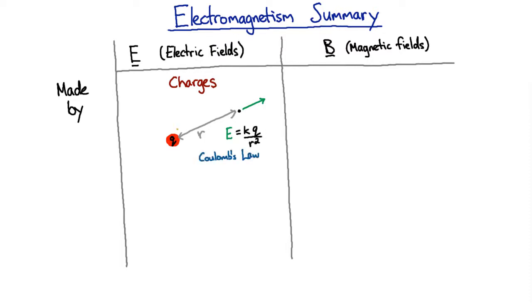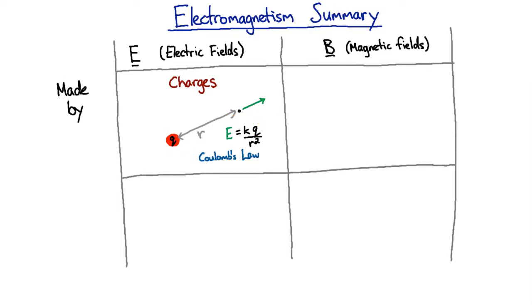For a negative charge, where the sign of Q is opposite, you just get the opposite vector — same size but pointing the opposite direction. So that's what electric fields are made by. What do they actually do?